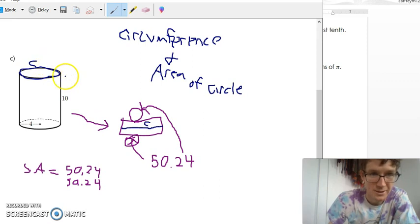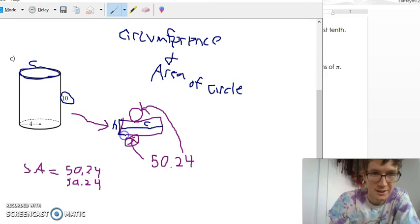So we want to find that circumference and then all we do is multiply it by this dimension, which is the height, so 10. That's the height on the net, this distance from here to here. So really we just got to find the circumference and multiply it by 10.